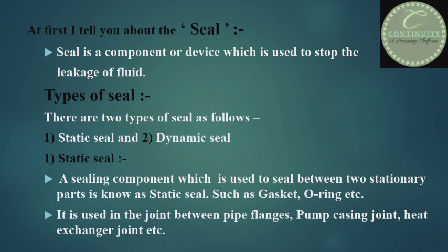A seal is a component or device which is used to stop the leakage of fluid — that is, to stop leakage from anywhere. The material which is used is called a seal, and this process is called sealing. It is used to stop leakage between two pipe joints, leakage in the pump casing, leakage in heat exchangers, etc.